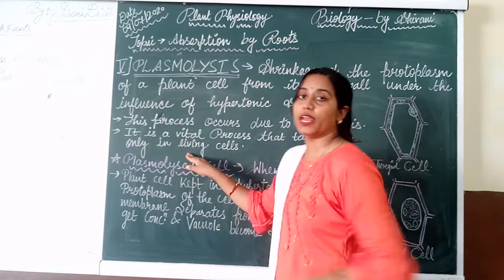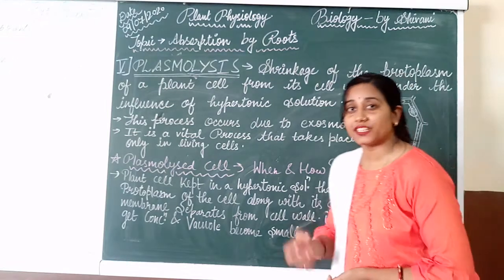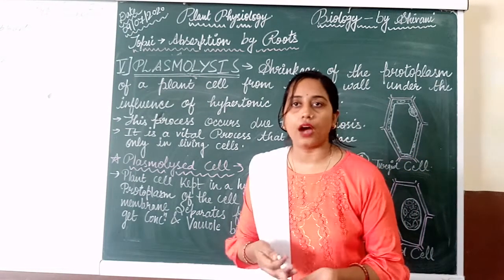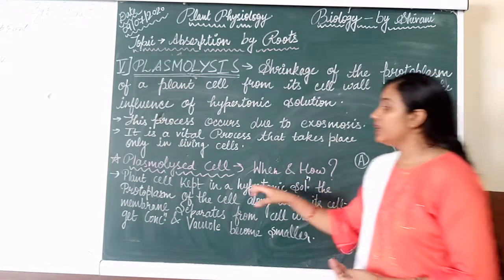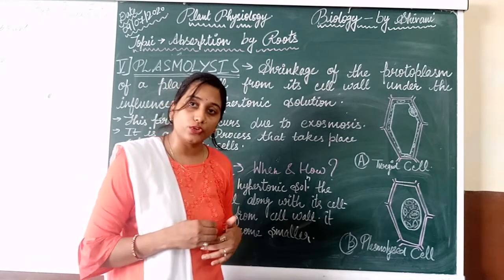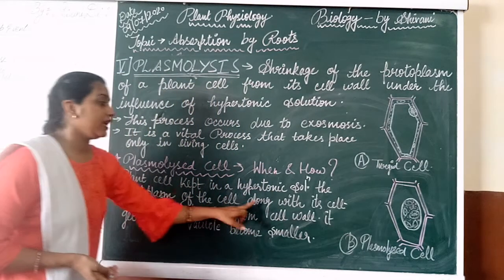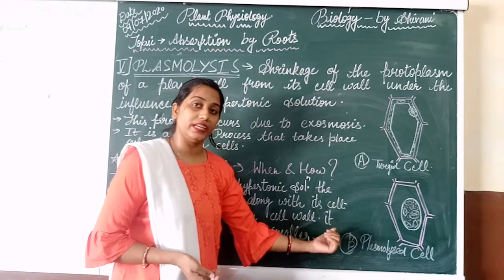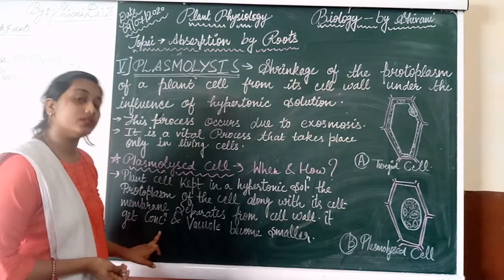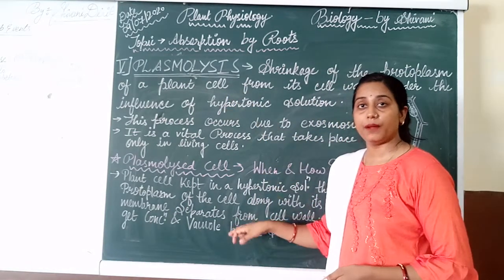Plasmolysis is a vital process and it occurs only in living cells. When a plant cell is kept in a hypertonic solution — meaning a solution whose concentration is very high — the protoplasm along with the cell membrane separates from the cell wall. It gets concentrated and the vacuole becomes smaller. This is the phenomenon after which the cell becomes a plasmolyzed cell.